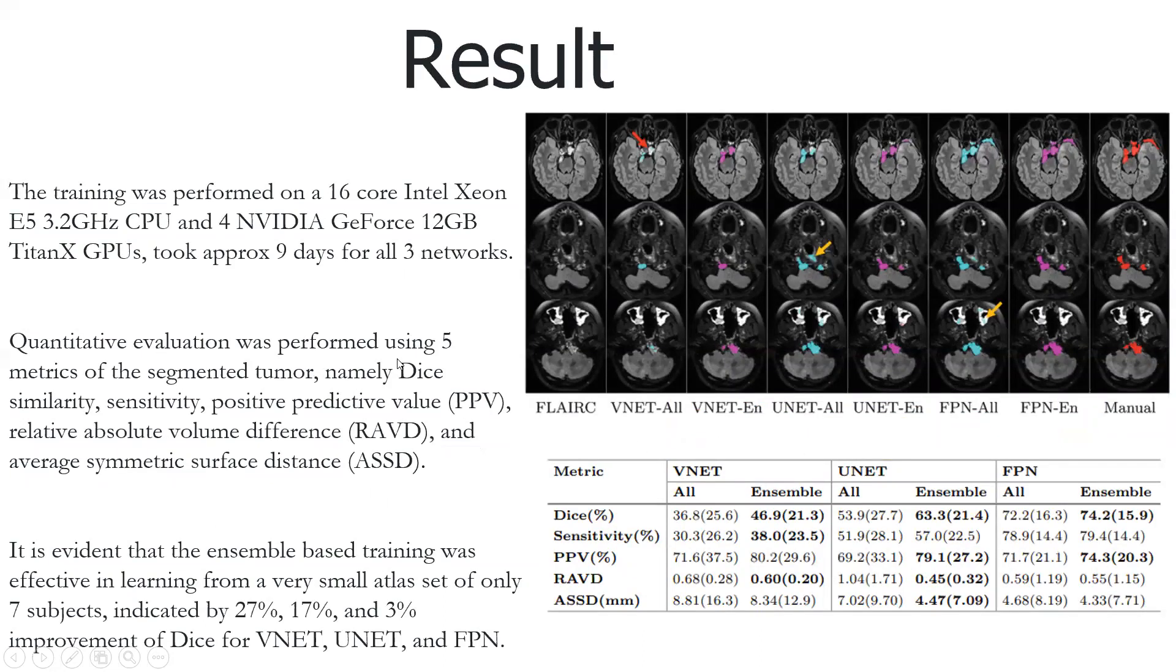The training was performed on a 16-core Intel Xeon E5 3.2GHz CPU and 4 NVIDIA GeForce 12GB GPUs, taking approximately 9 days for all three networks. Here we can see output of three different subjects with and without the proposed model. Red and yellow arrows show false positives and false negatives respectively. We can clearly see that ensemble models improved accuracy. Here V-Net all means without ensemble techniques, and V-Net EN means with ensemble techniques.